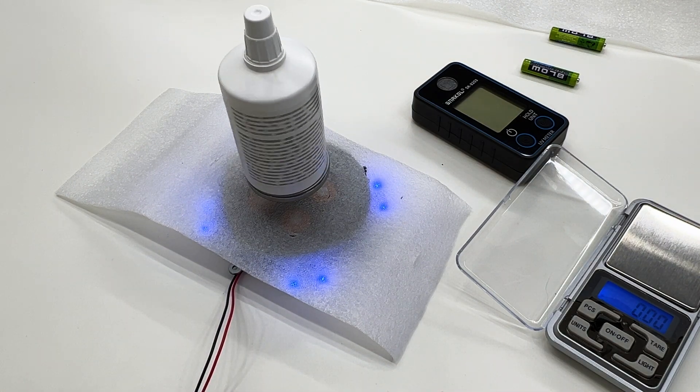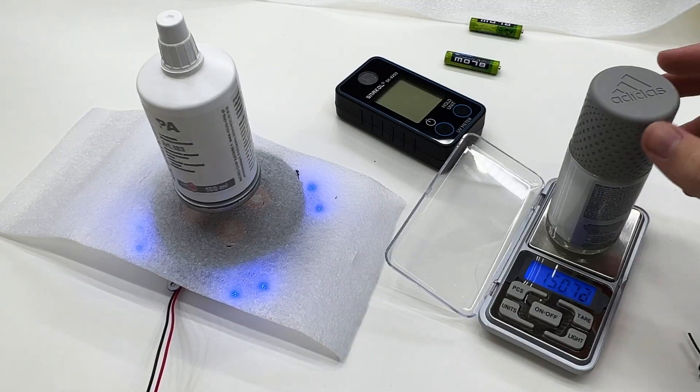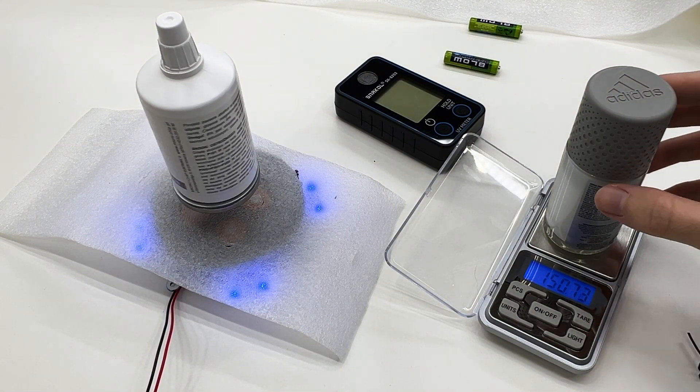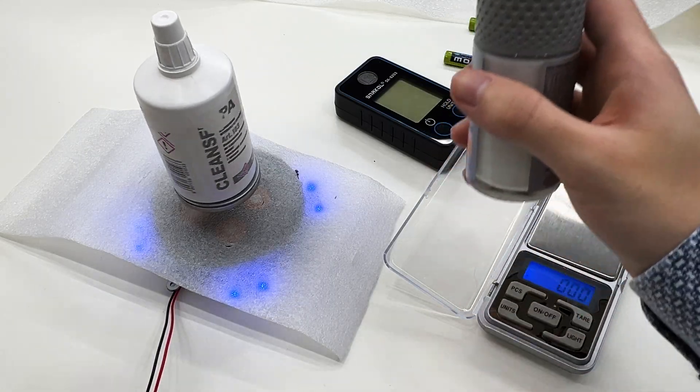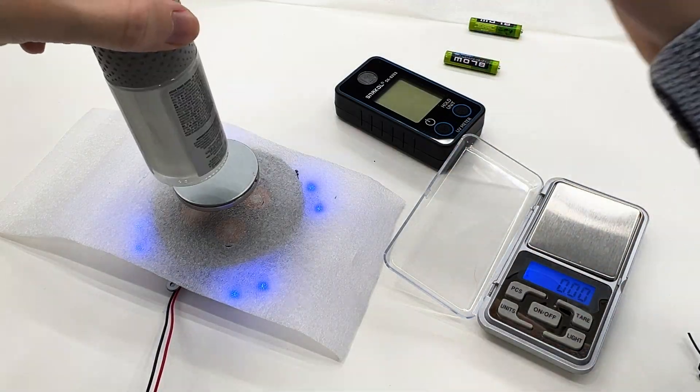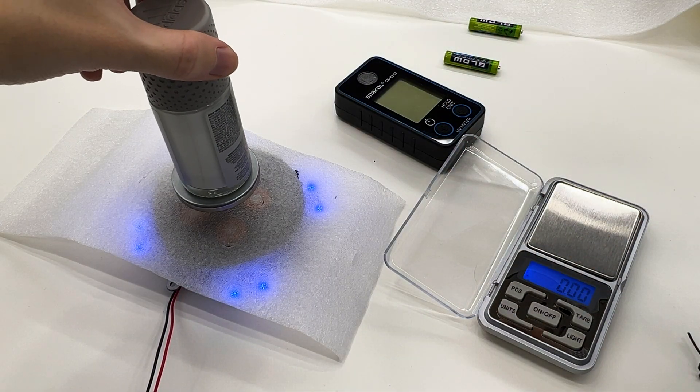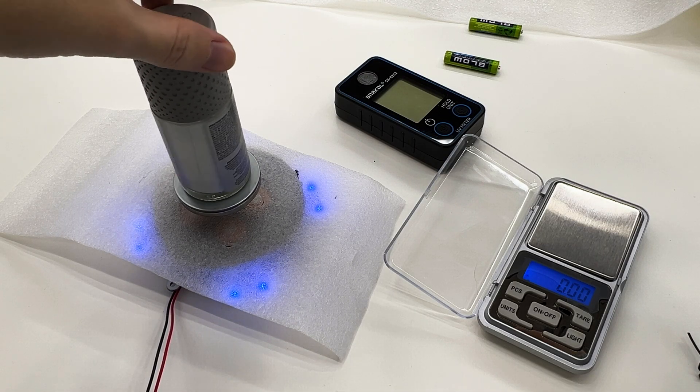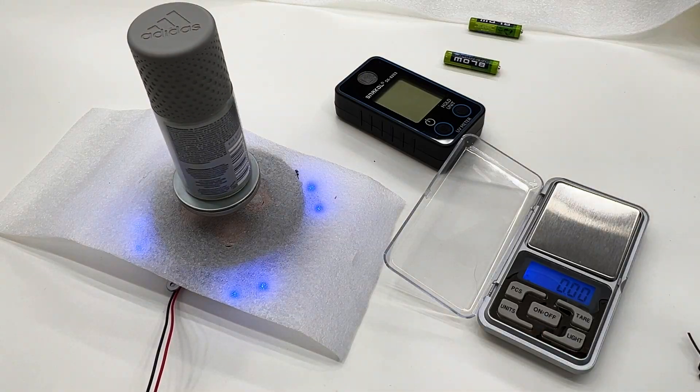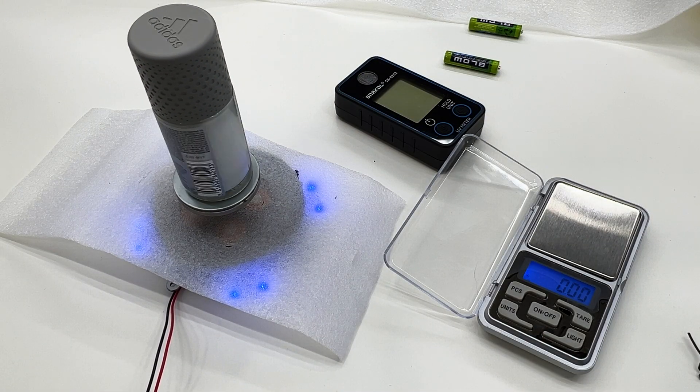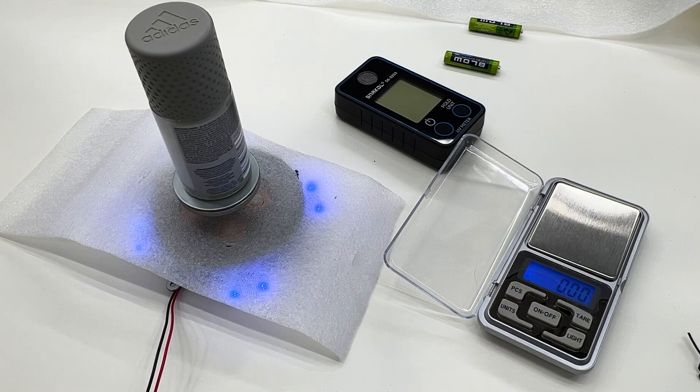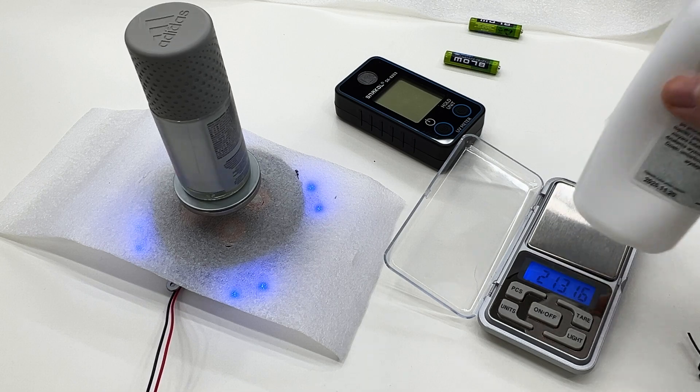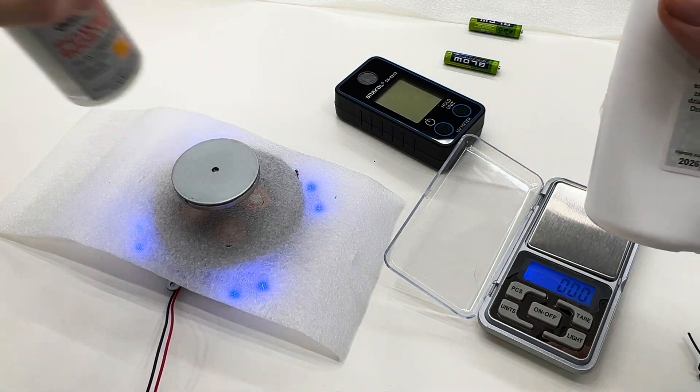Let's find something non-magnetic but heavier. I have heavier object right here, 150 grams. Let's try it. It is holding it. It is holding it. Let's see if I have something even heavier that doesn't contain metal. 209 grams bottle. Let's try it.